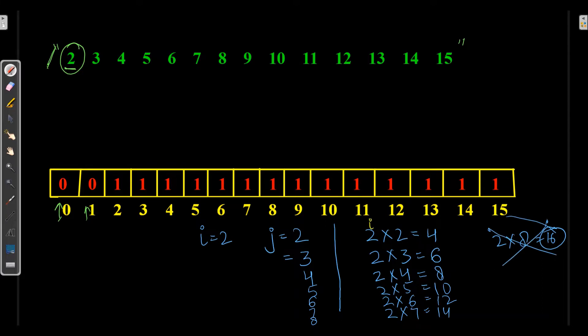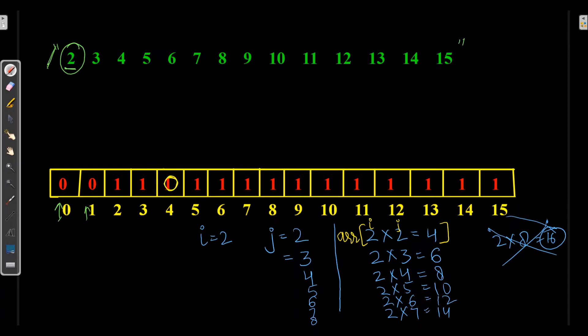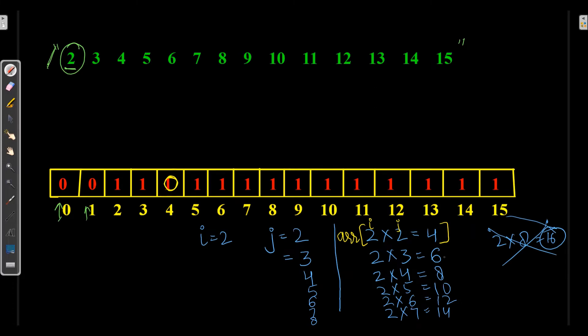As i and j are varying, we want array of i times j. So we make array of 4 as 0, because multiples of prime numbers can never be prime. I have made array of 4, 6, 8, 10, 12, and 14 all 0. You know even numbers except 2 are never prime.